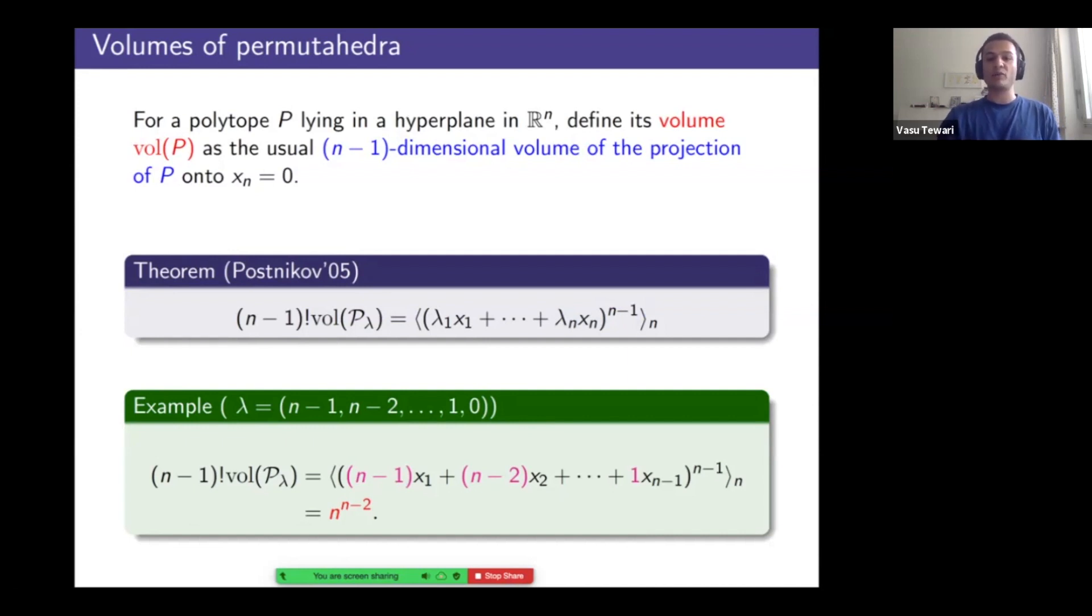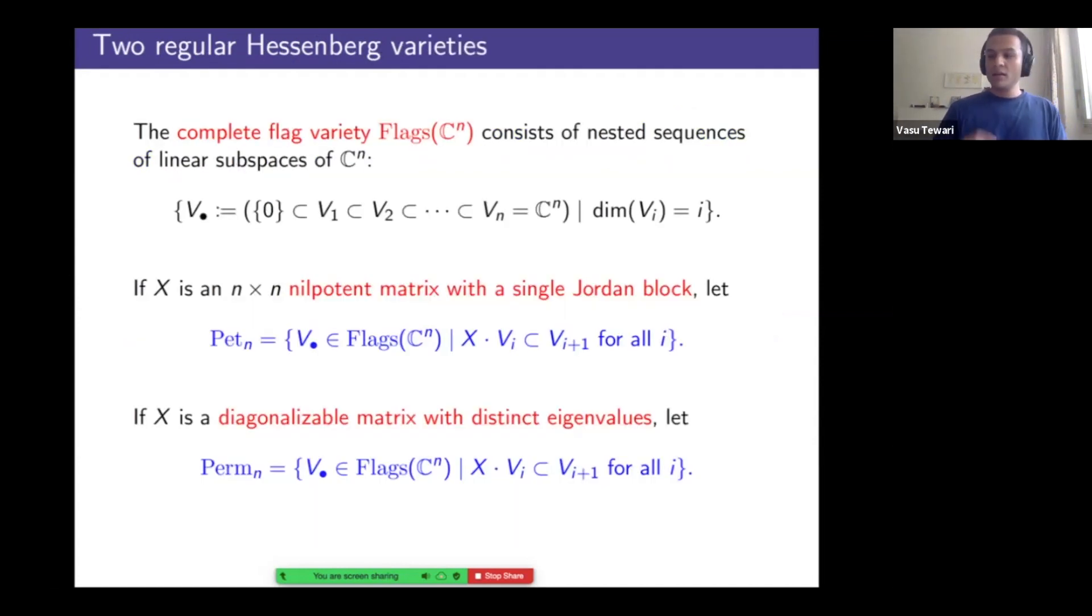So Postnikov proved that the volume of the usual permutohedron up to a factor of n minus one factorial can be obtained by performing divided symmetrization on the n minus one power of a linear form. So lambda 1 x1 all the way through lambda n xn raised to the n minus one power, you've got something in the degree n minus one component and then perform divided symmetrization. And if you try this with the standard permutohedron you would get this kind of neat result. So the standard permutohedron has a tiling by parallelopipeds and one knows for other reasons that the volume is supposed to be n to the n minus two. But if you're staring on the right hand side here you're starting with the n minus one power of this mess, taking a bunch of rational fractions and watching the thing collapse to n to the n minus two. This is definitely worth understanding what's going on here.